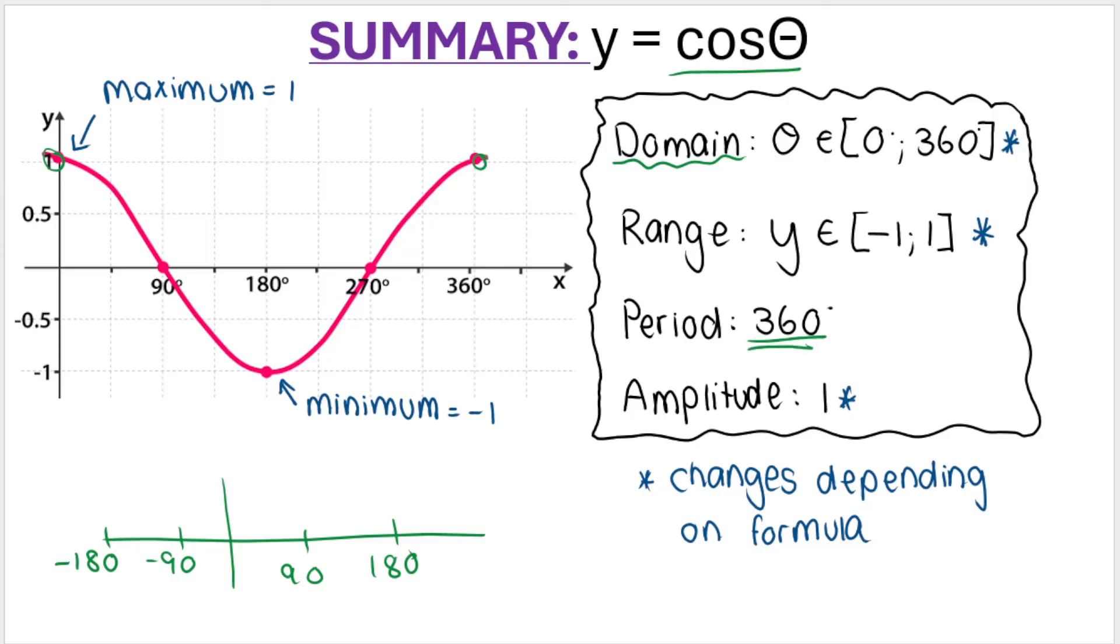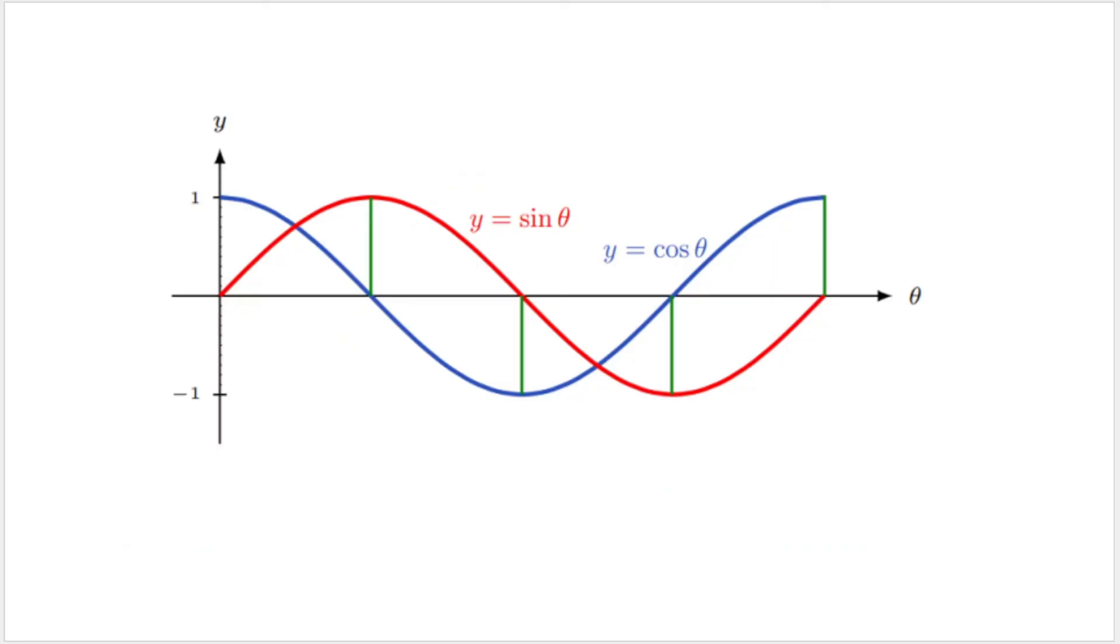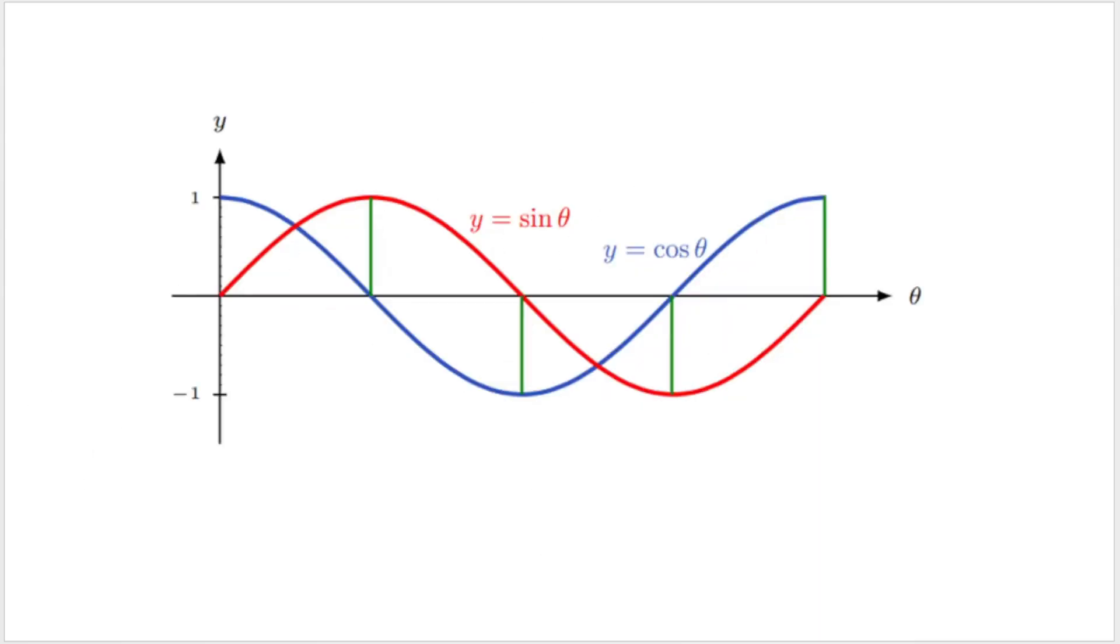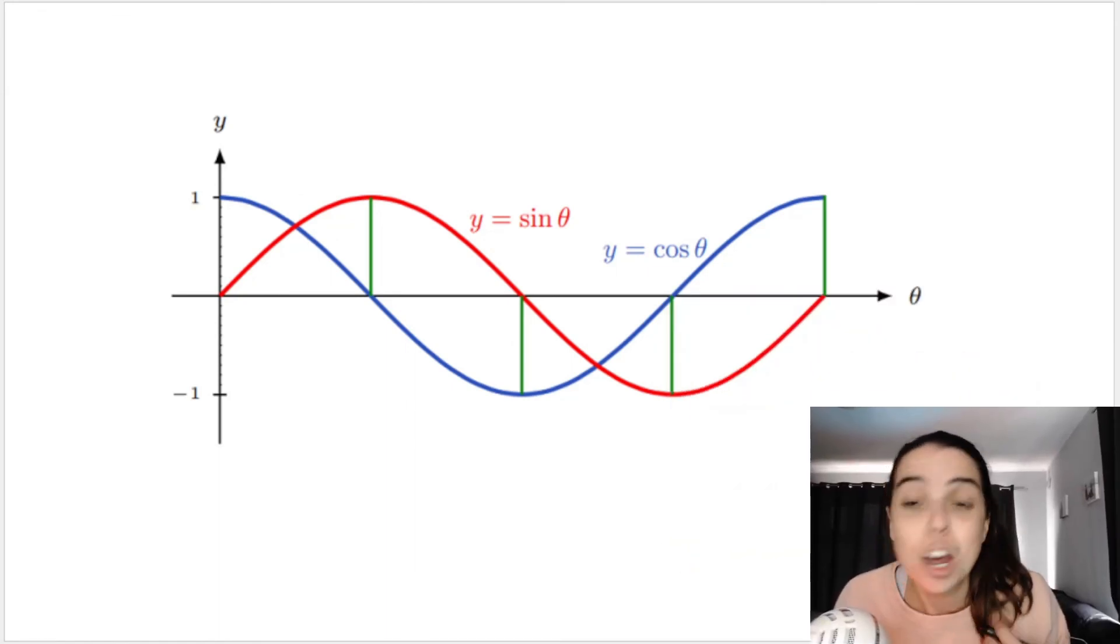And I thought it would be interesting to show you how similar the sin graph and the cos graph really look. They basically just start at different places. Look at that. Okay, in the next video we'll be tackling the tan graph, and in other videos in this playlist we cover more complicated things like the vertical stretch, so changing the amplitude, the vertical shift, and other things related to that. So check out the other videos linked in the playlist in the description below. See you in another video very soon. Bye everyone.